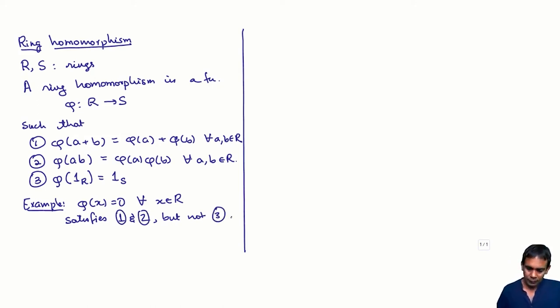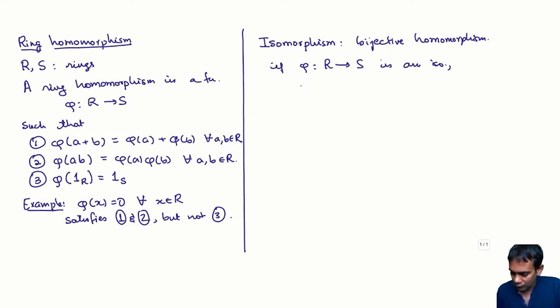And we can talk about isomorphism. An isomorphism of rings is a bijective homomorphism. And if phi from R to S is an isomorphism, then phi inverse from S to R is also an isomorphism.